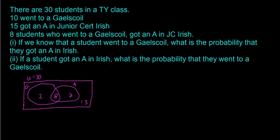So this is kind of what conditional probability is. I'll start with part 1. We know the probability that a student went to a Gaelscoil is going to be 10 over 30, or 1 over 3.